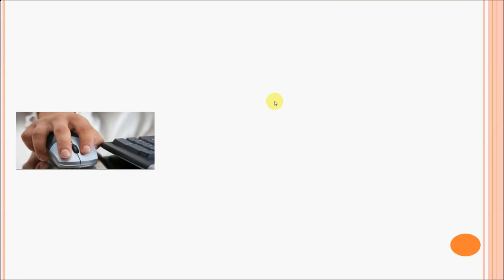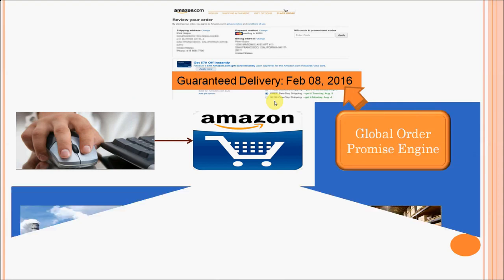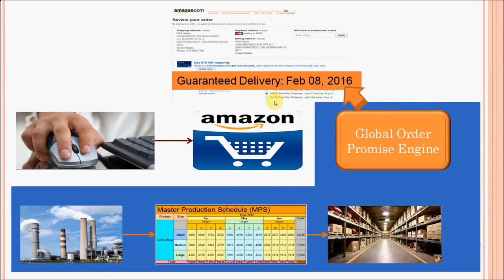What is GOP? How is it being used for promising orders? When you create a sales order or order an item in an e-commerce application like Amazon, when you try to checkout, the system will show you a guaranteed delivery or a range of dates where you can make a free no-rush delivery. How does the system come up with the guaranteed delivery date and the free no-rush delivery dates?